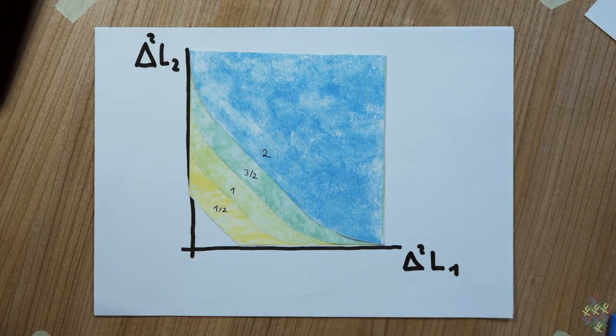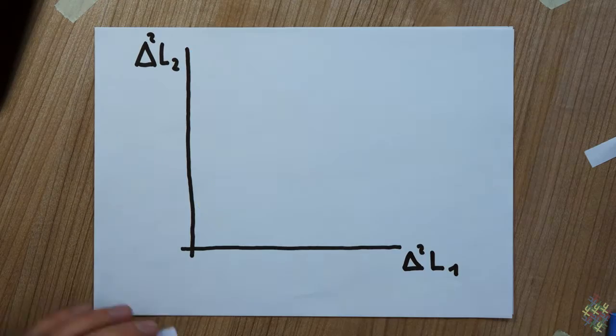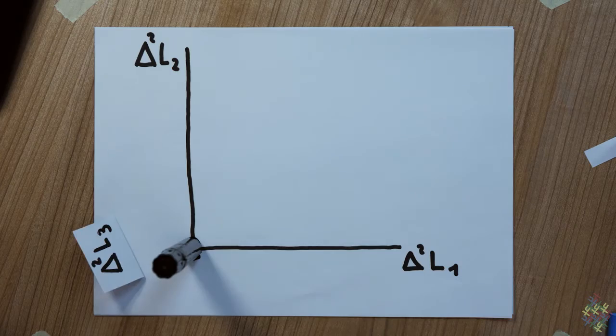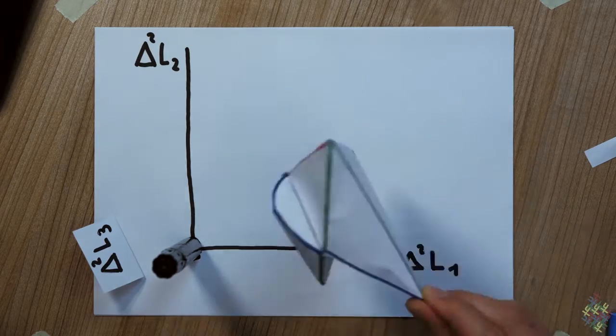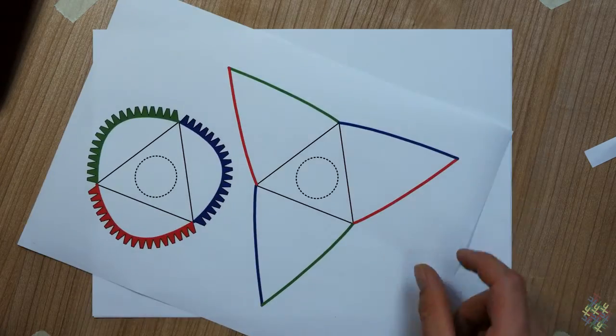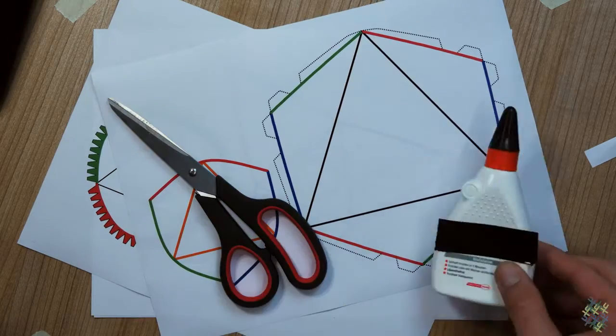Actually, there is nothing to stop you from doing the same thing for all three components, so you get 3D objects. Here is the example for s equal one. You can also build this model by using the paper cutout in the supplement.